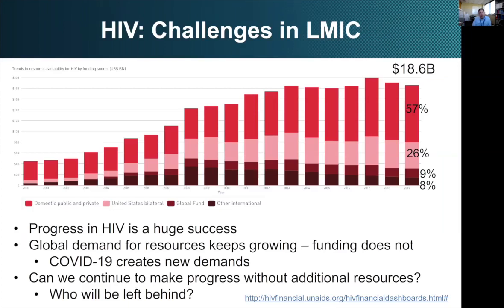One of the major challenges is funding. This slide shows total funding for HIV-related work in low- and middle-income countries around the world. We have made dramatic progress, but the global demand for resources keeps growing while funding is essentially flat. COVID-19 is going to create new demands on this funding. At present, 57% of all funding for HIV-related work in low- and middle-income countries comes from domestic public and private sources. The second largest source is the United States government, primarily through PEPFAR, which contributes 26% of all funding internationally.